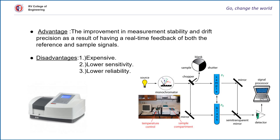The advantages of the colorimeter are that it improves measurement stability and drift precision, which is a result of real-time feedback of both reference and sample signals. The disadvantages are that it is expensive and has low sensitivity and reliability.